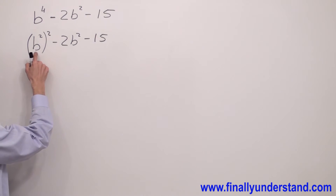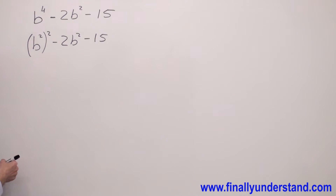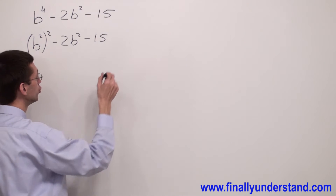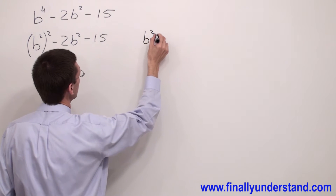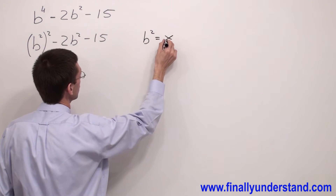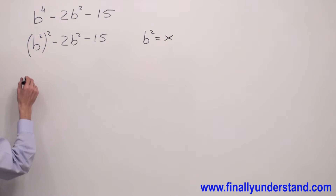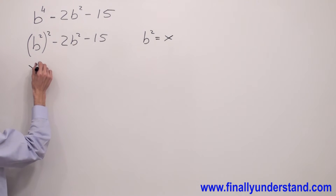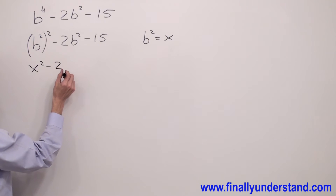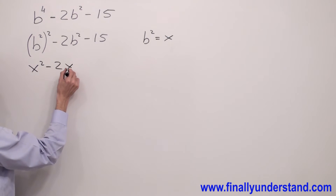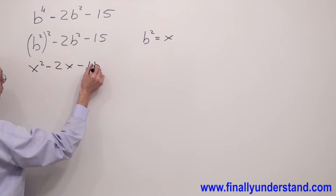I have b squared and b squared. In order to make this problem look simpler, I'm going to assume that b to the second power is equal to x. Let me rewrite this problem: x squared minus 2x minus 15.